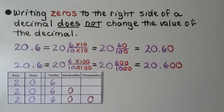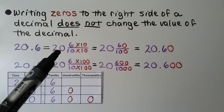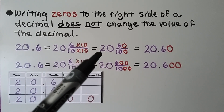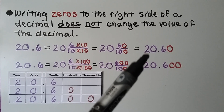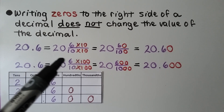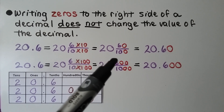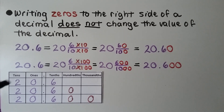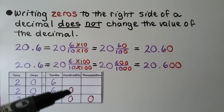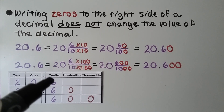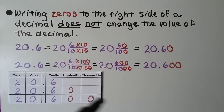Writing zeros to the right side of a decimal does not change the value of the decimal. We have 20 and 6 tenths. We can write it as a fraction: 20 and 6 tenths. If we multiply the numerator and denominator by 10, we'll have 20 and 60 hundredths. We can multiply by 100 and have 20 and 600 thousandths. We still have two tens, zero ones, and six tenths. We can write as many zeros to the right side as we need.